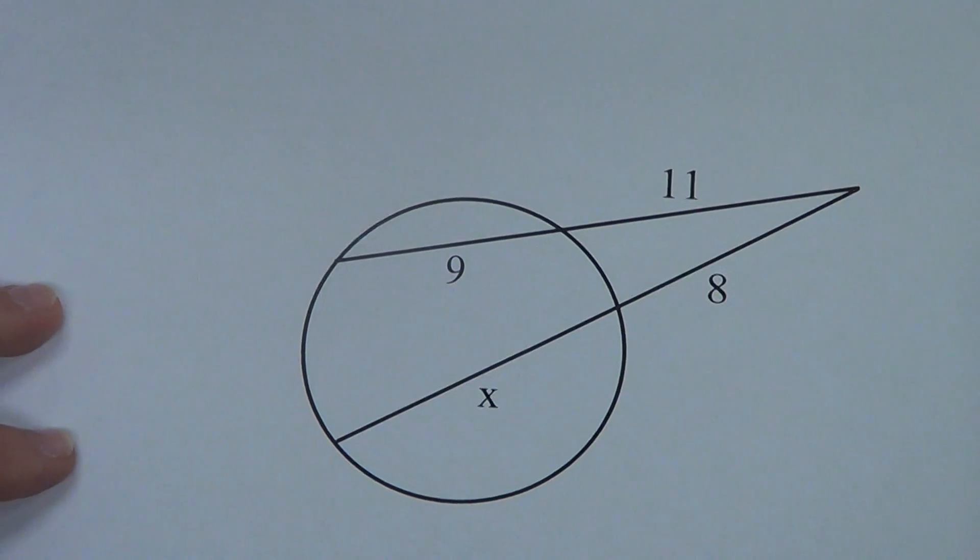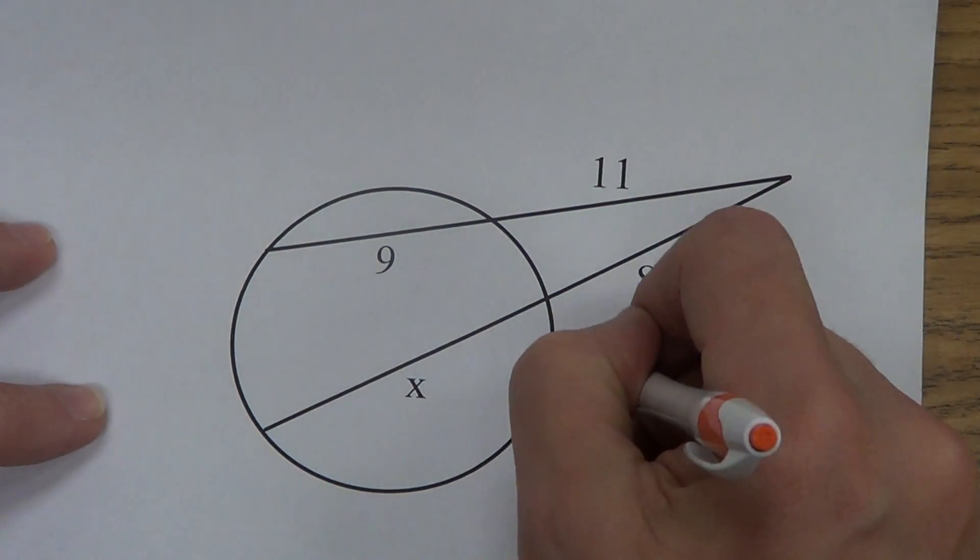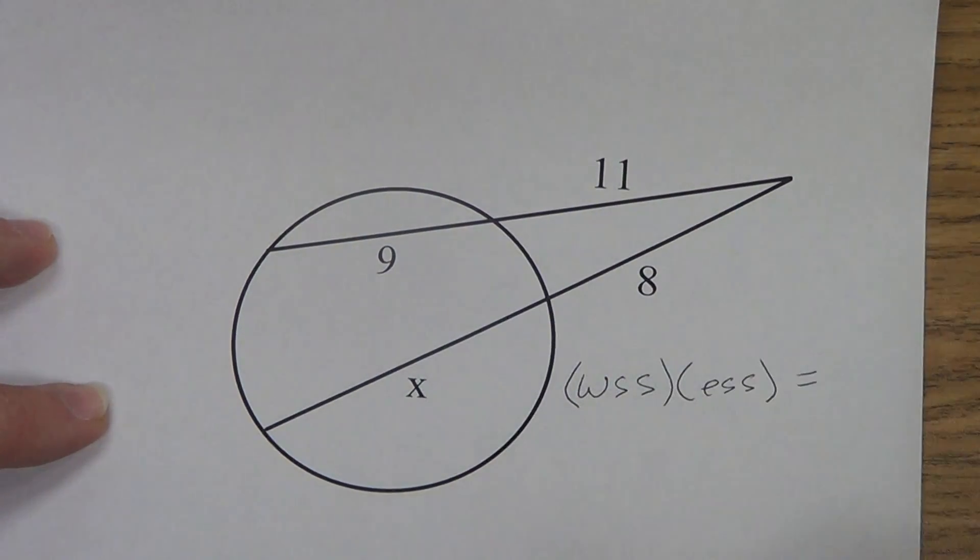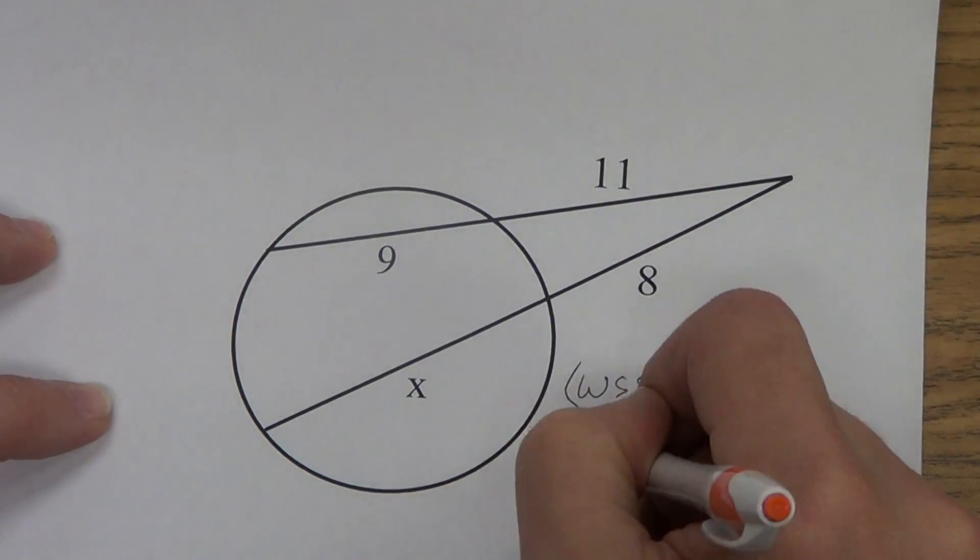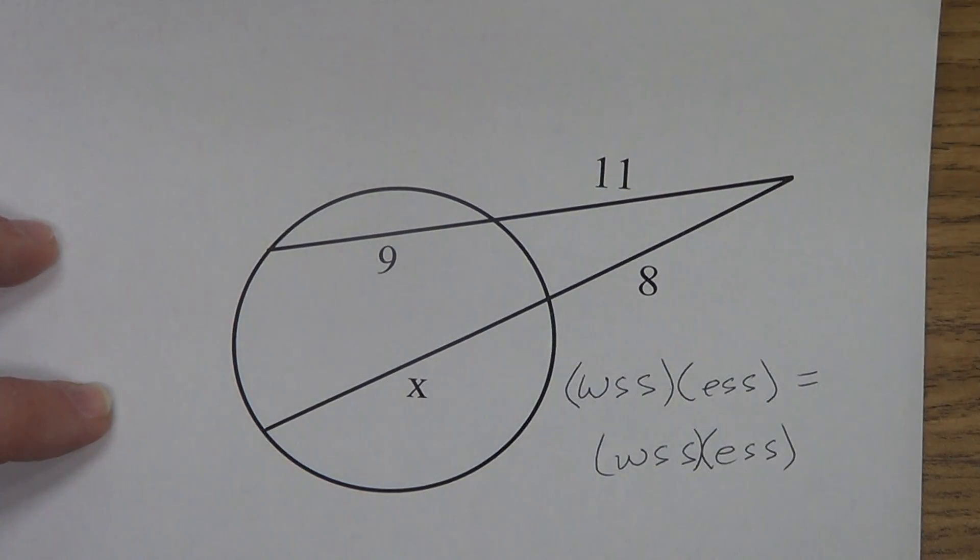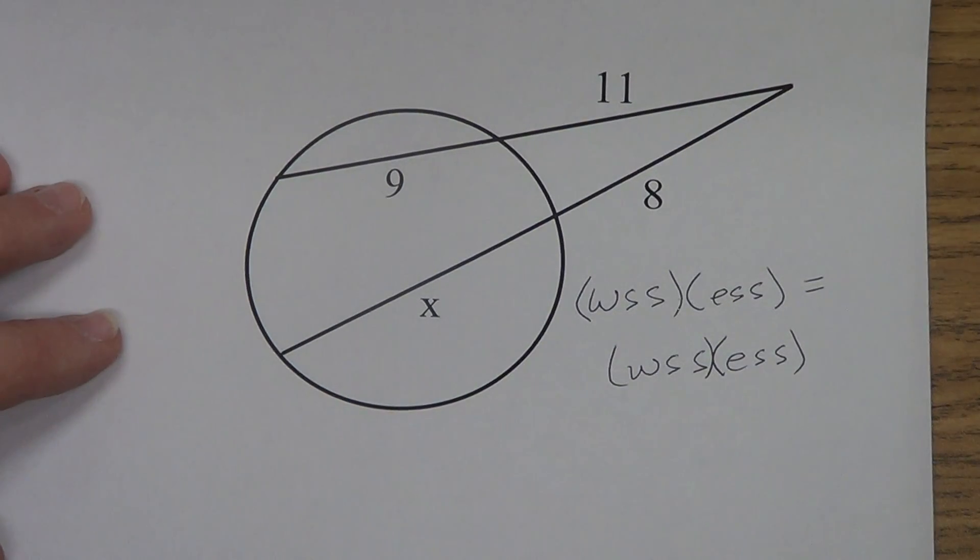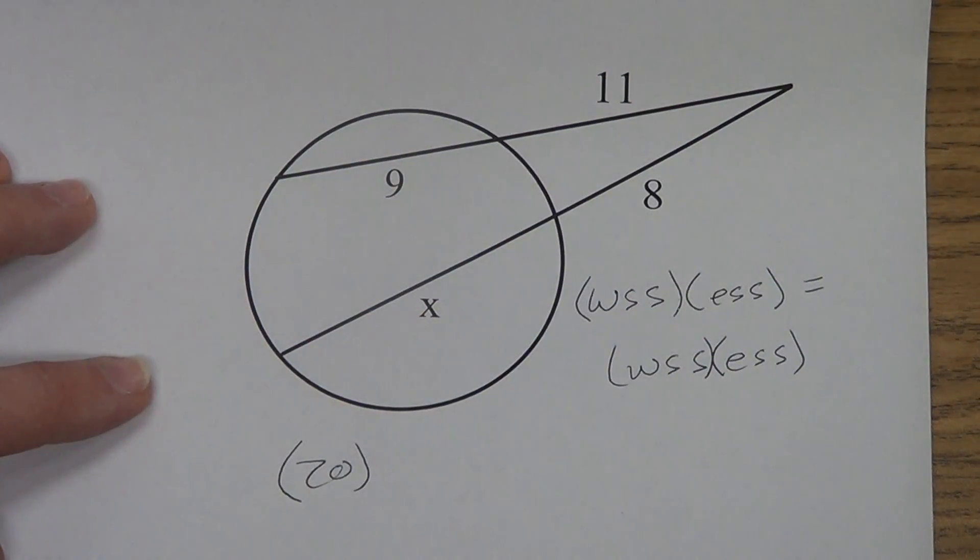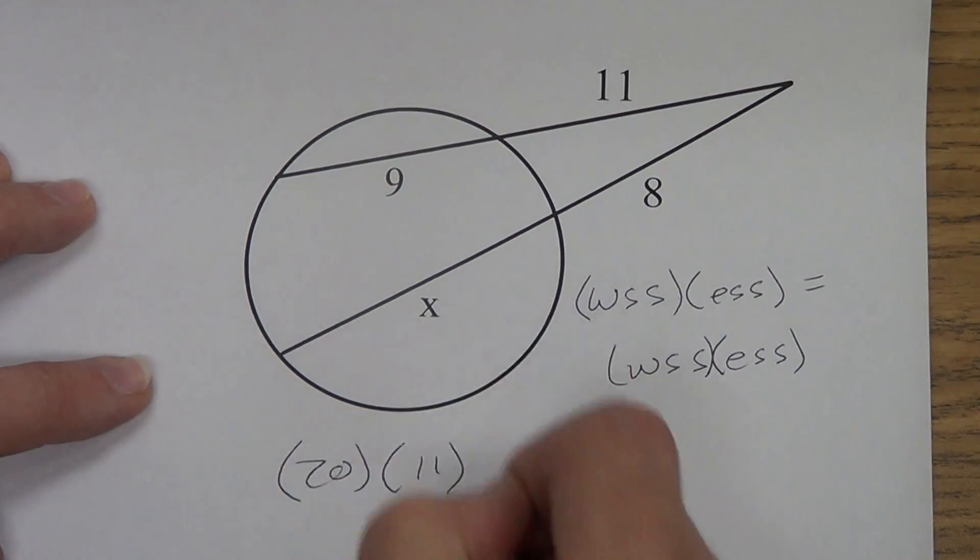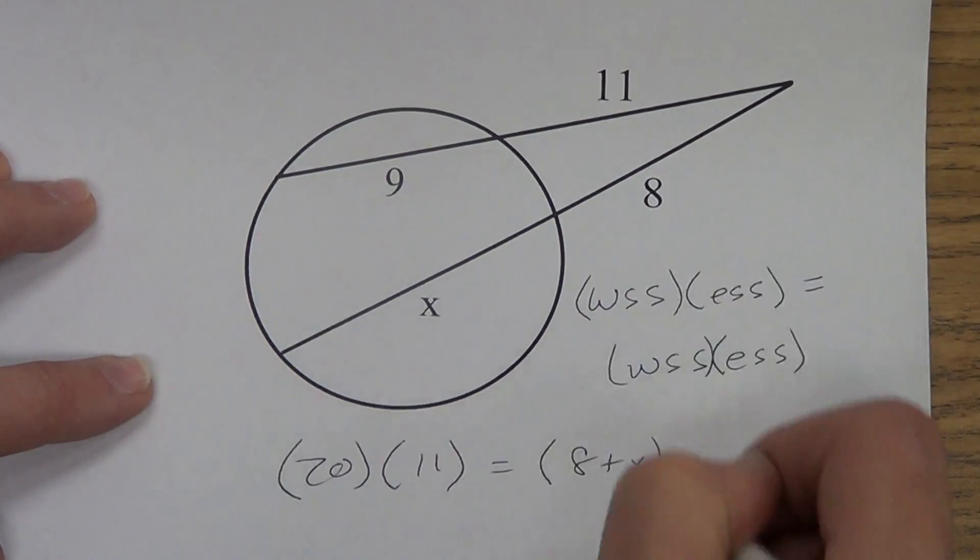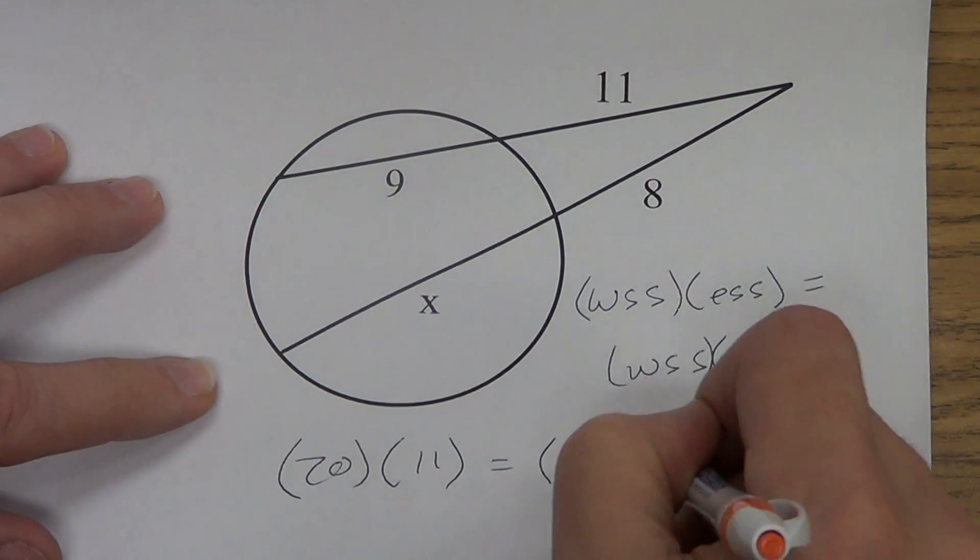All right, different theorem. Hopefully you remember what we do on this one. This is our WSS times ESS equals, we're in that room, so we'll go WSS times ESS down here. So let's put that into practice. WSS, the whole thing is 20, times the external part is 11, equals the whole thing is 8 plus x, times the external part is the 8.